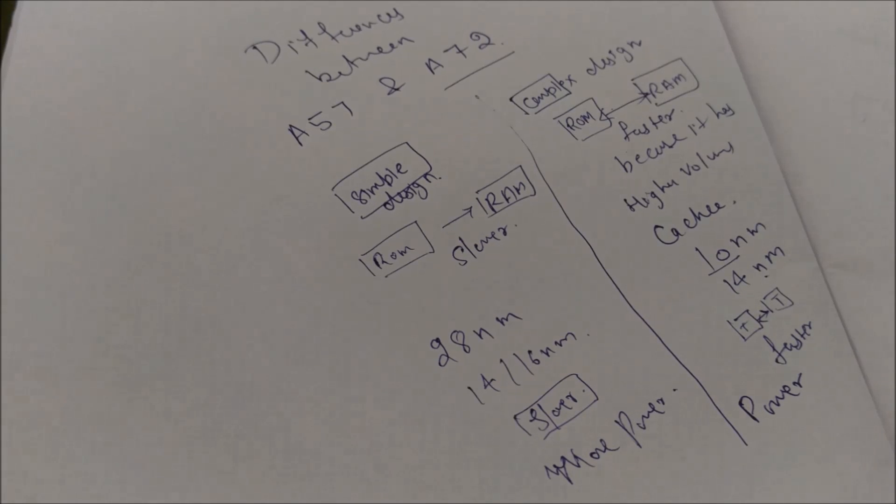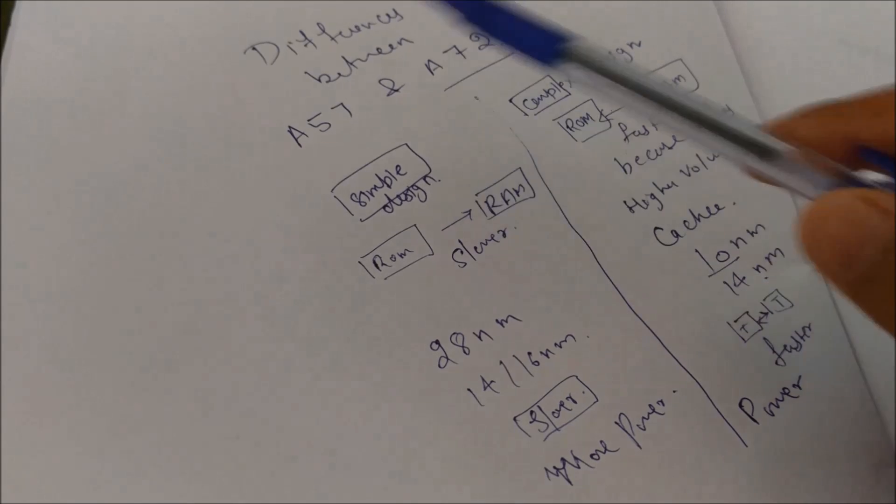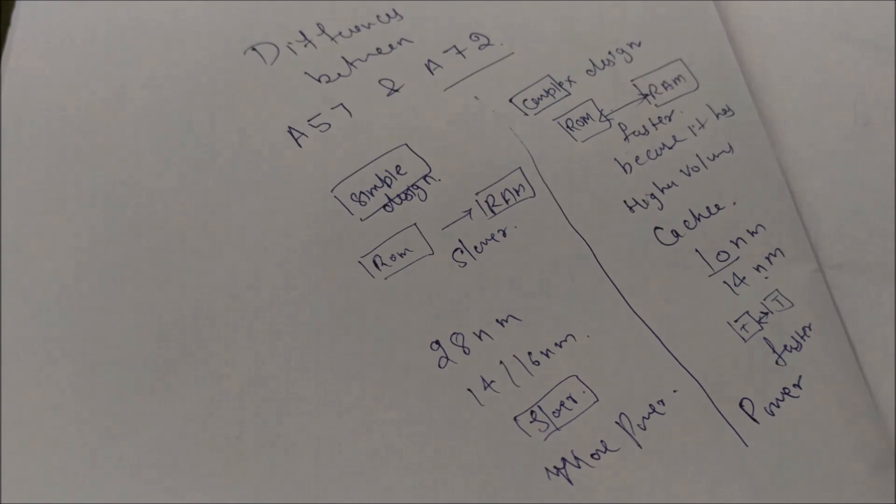So the simple thing is that if you have architecture with less number it will have greater battery life but it will have less performance, and if you have architecture with higher number it will have more performance and less power efficiency.